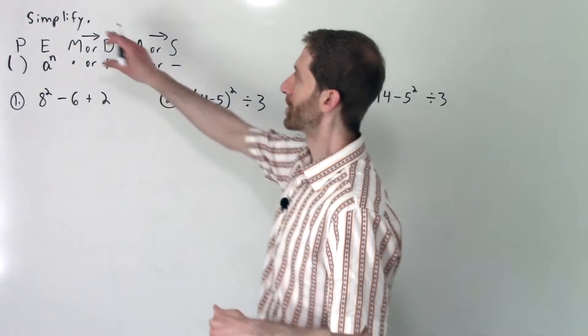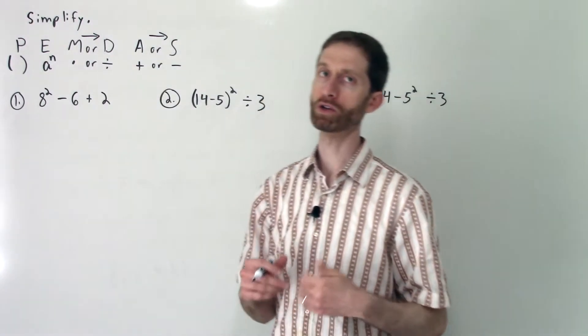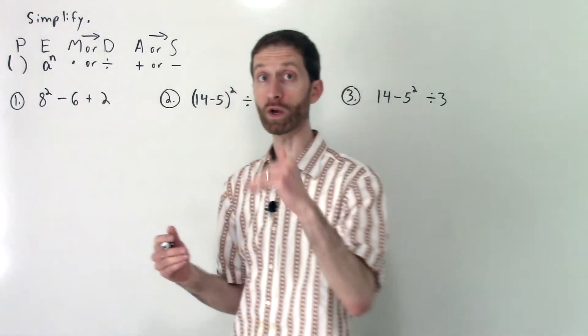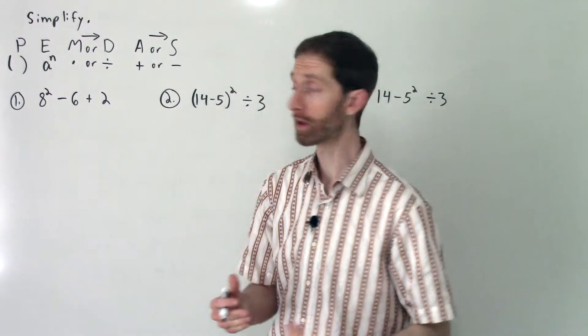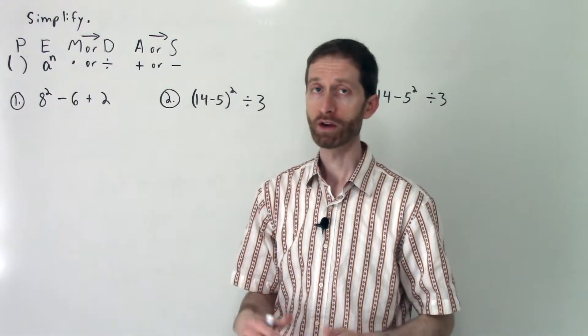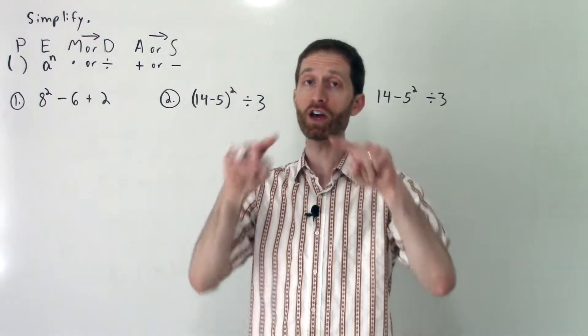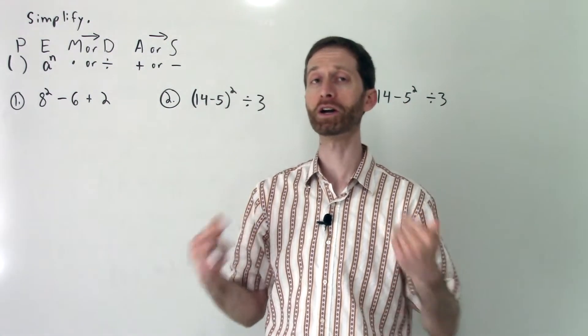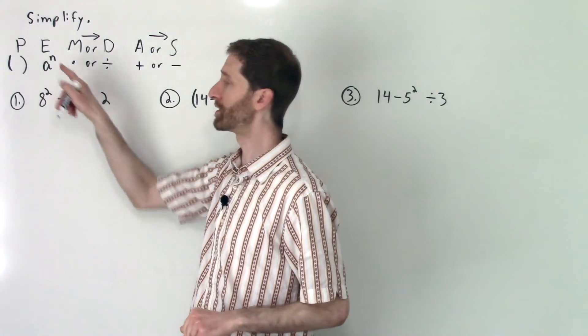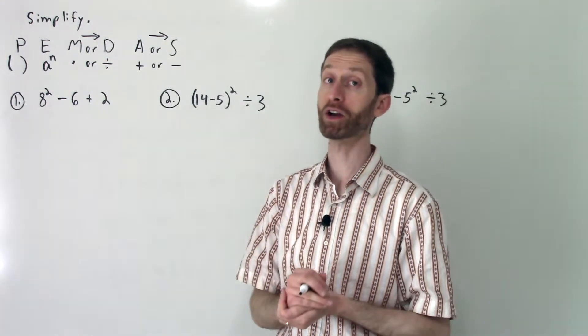It says to simplify and I've written a reminder of what the order of operations is. You've got PEMDAS, which stands for the order in which you do your operations in math. First you do parentheses. Parentheses are really also grouping symbols, so that can be a square root sign, an absolute value sign, and eventually I'll show you a fraction bar. Then you've got exponents - that's raising things to a power.